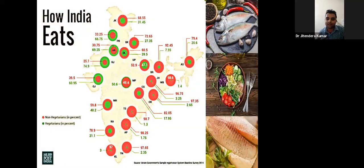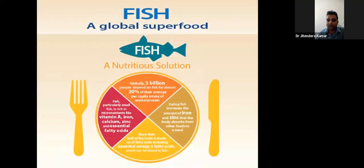Looking at how India eats, there is a beautiful projection of Indian dietary habits. The southern part — Karnataka, Tamil Nadu, Telangana — eats more non-vegetarian food compared to the northern areas like Punjab, Delhi, Rajasthan, and Gujarat, where vegetarian food is preferred. Fish is considered a super food, containing much nutrition. Globally, three billion people are dependent on fish, which constitutes almost 20 percent of their per capita animal protein intake.